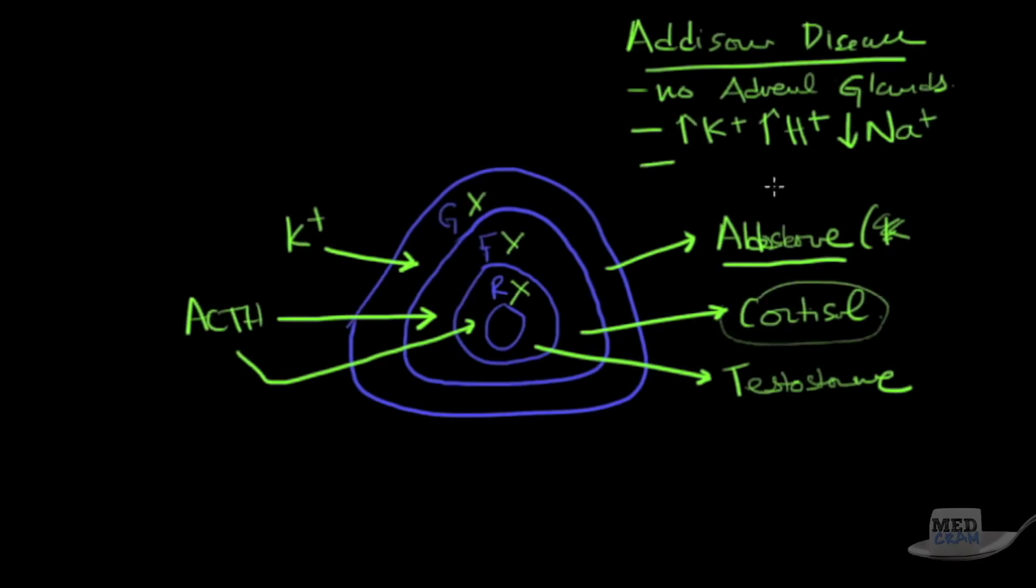What else would you see? Your cortisol level is not going to be working, so you're going to see decreased glucose. Especially in stressful situations where you need glucose to do flight and fight, you're not going to have it. And then finally, lack of testosterone, which really doesn't cause that much of a problem, at least acutely. So what are you going to see in Addison's disease? Hyperkalemia, metabolic acidosis, hyponatremia, and hypoglycemia. And you also see, because of that low sodium, you're going to have low blood pressure. That's the big problem.